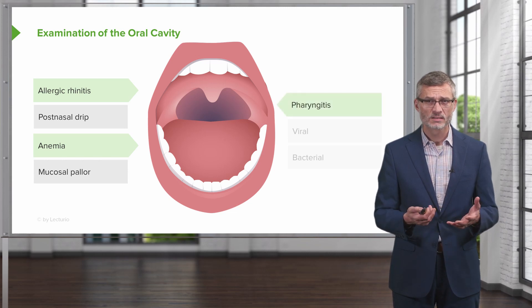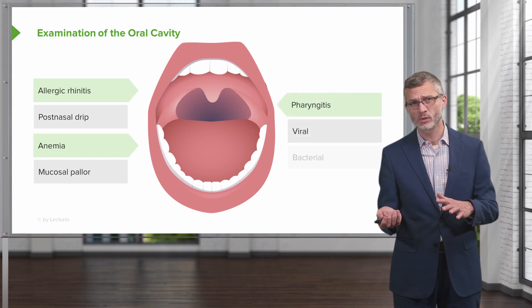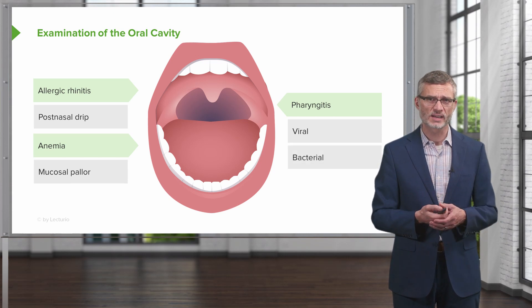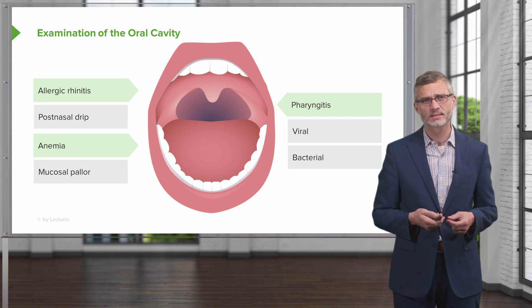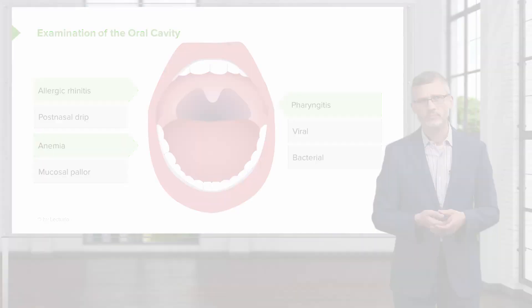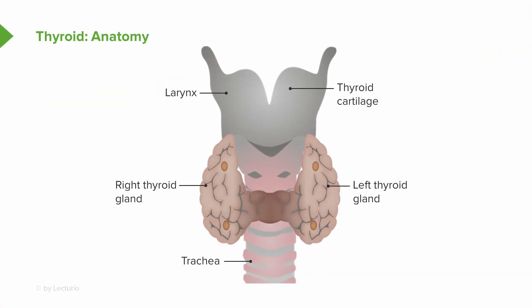With pharyngitis, we're trying to distinguish between viral versus bacterial pharyngitis, the latter of which more often presents with tonsillar exudates. We're also going to briefly review the anatomy of the thyroid gland — remember that the thyroid gland is not attached to the thyroid cartilage, and we'll talk about how to locate where the thyroid is best found on physical exam.